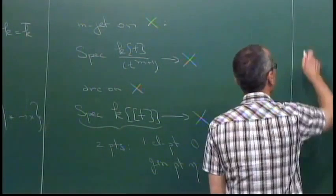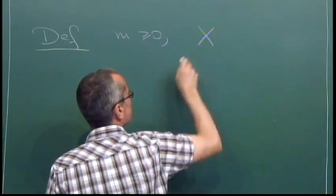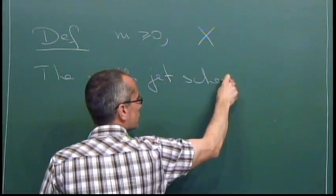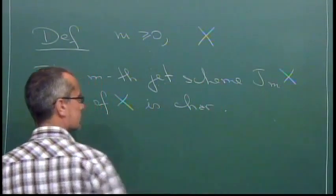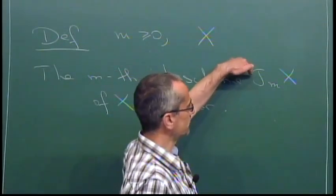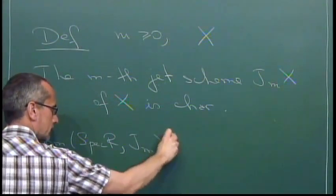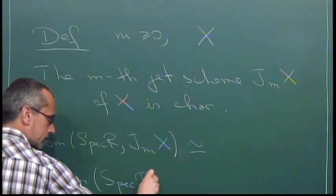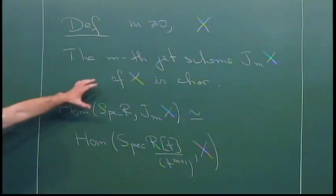The main object is the jet scheme. If M is a non-negative integer and X is as above, the M-th jet scheme J_M(X) is characterized as follows: the R-valued points of J_M(X) are in natural bijection with the set of R[T]/(T^{M+1})-valued points of X itself. This characterizes the functor of points for the M-th jet scheme.